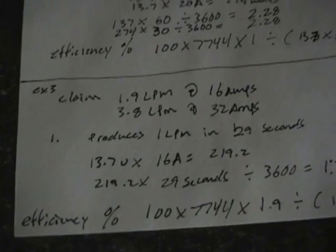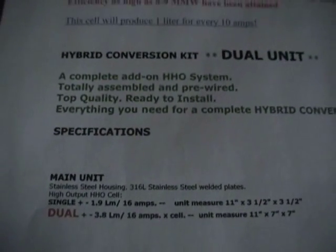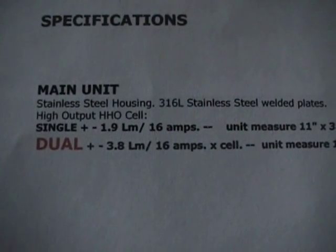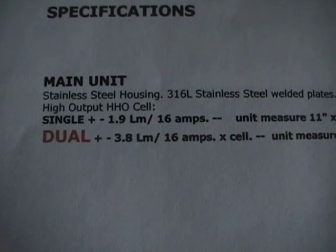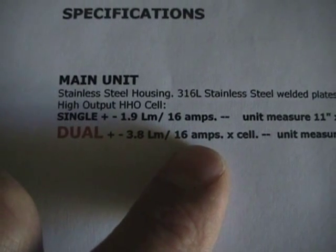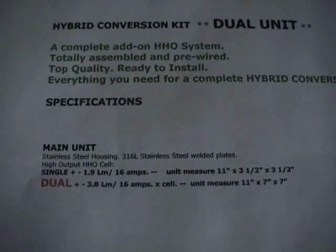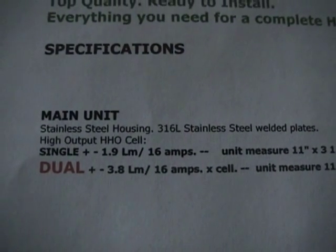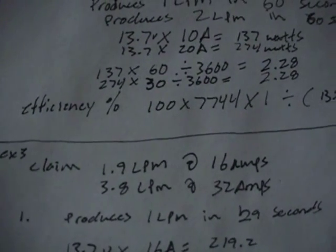Let's go through one other example. This unit shows a hybrid conversion kit. A single unit will do 1.9 liters per minute at 16 amps, and a dual unit will do 3.8 liters per minute at basically 32 amps. It turns out this is one of the more reputable dealers on this auction site — these guys sell a lot. It may be a good product, but they're putting out some false claims. They're claiming 1.9 liters per minute at 16 amps and 3.8 liters per minute at 32 amps.